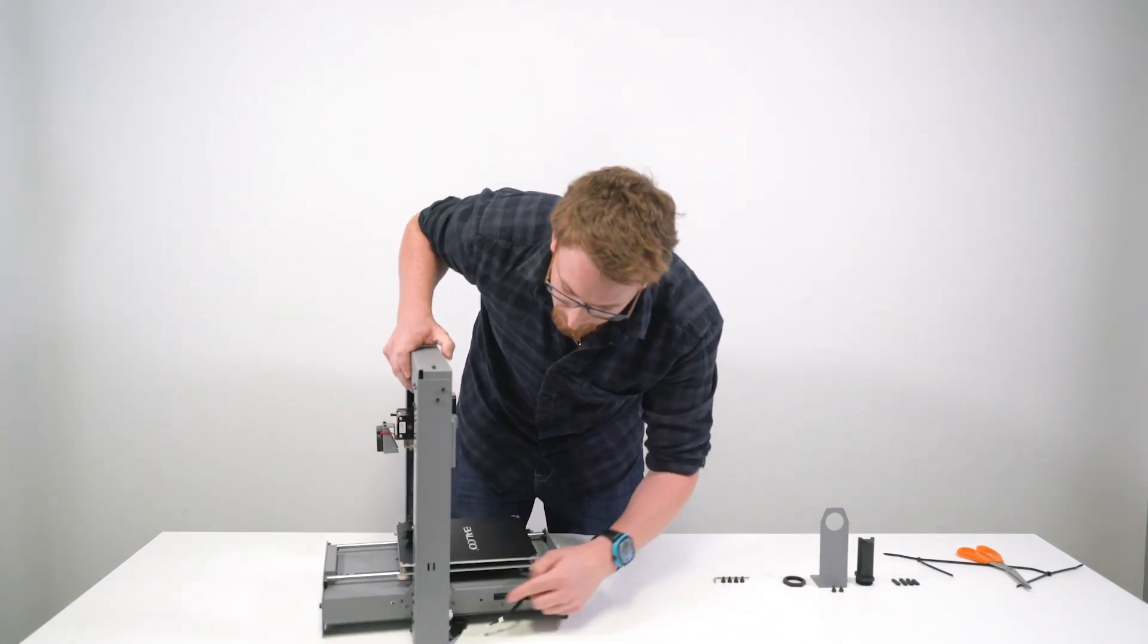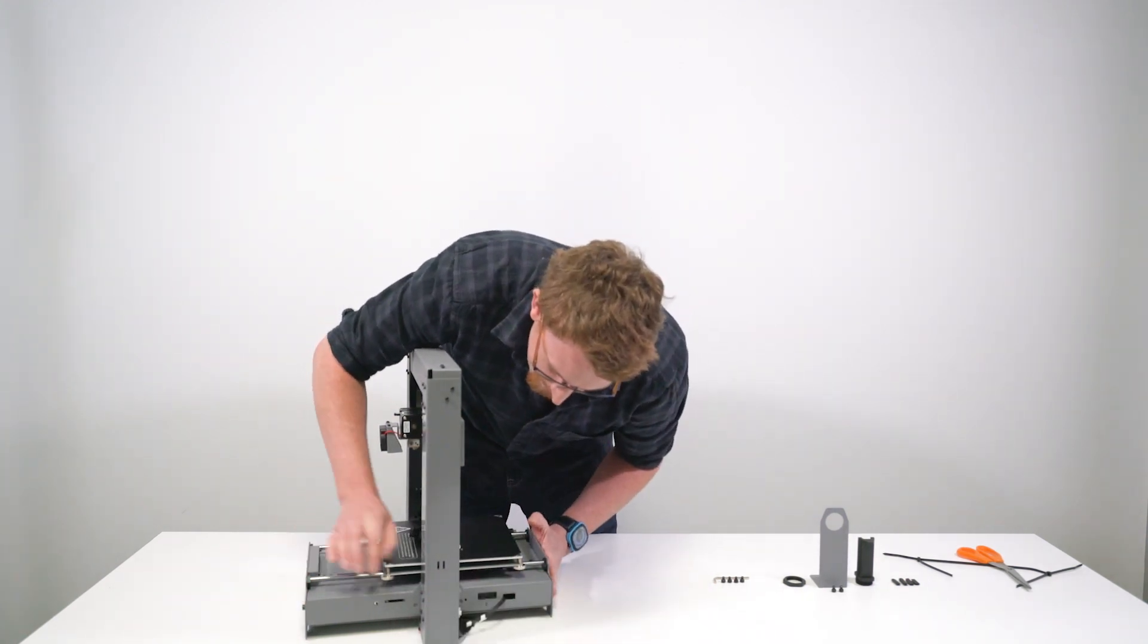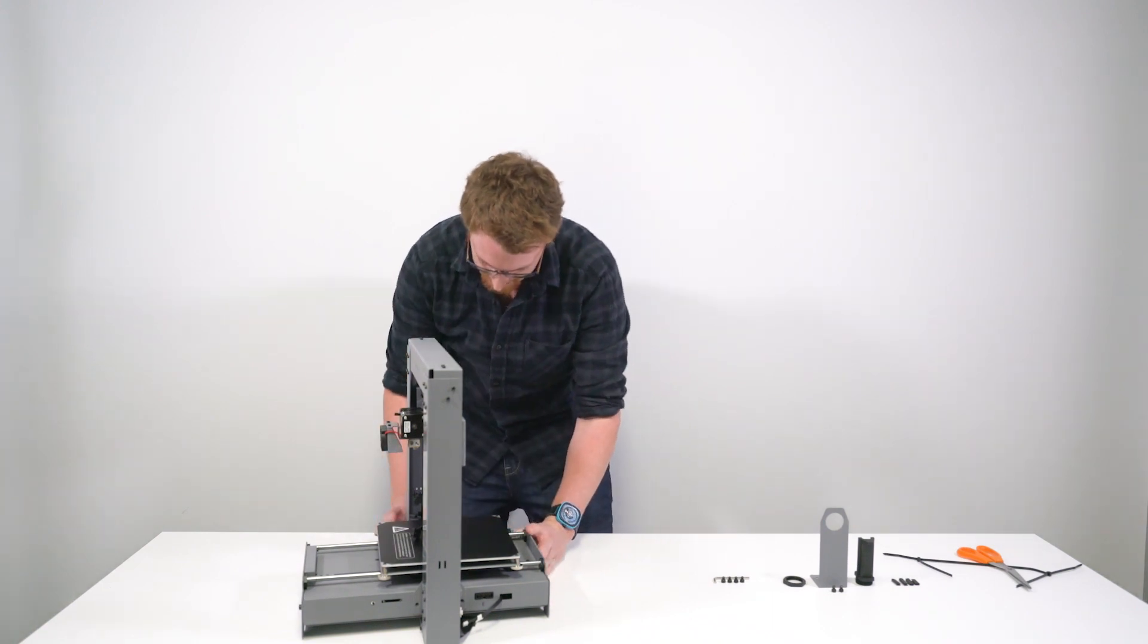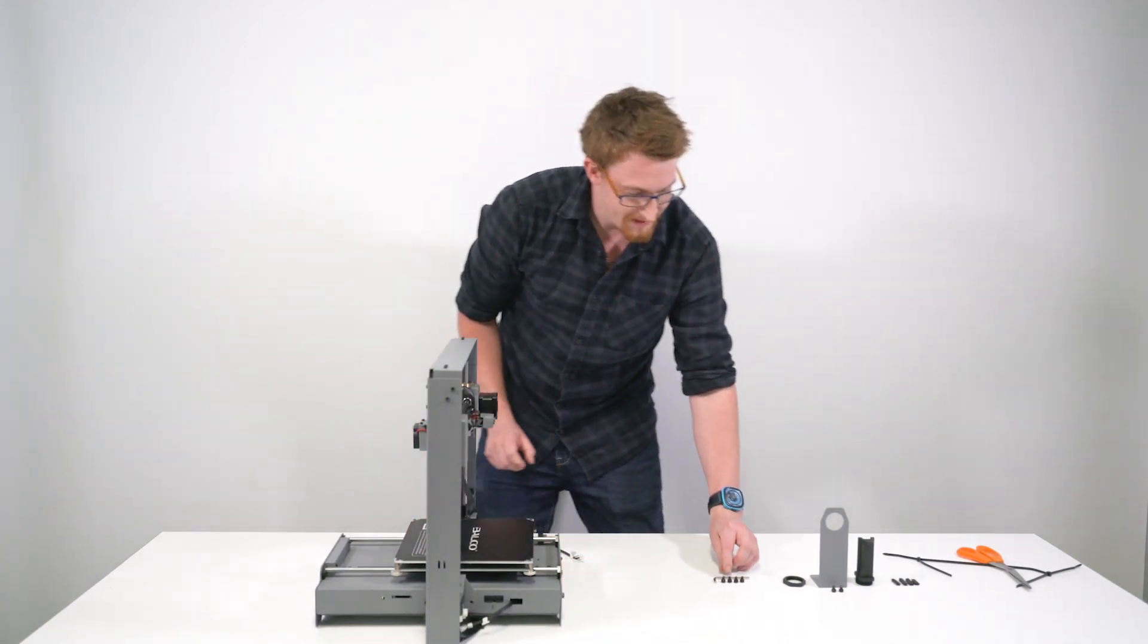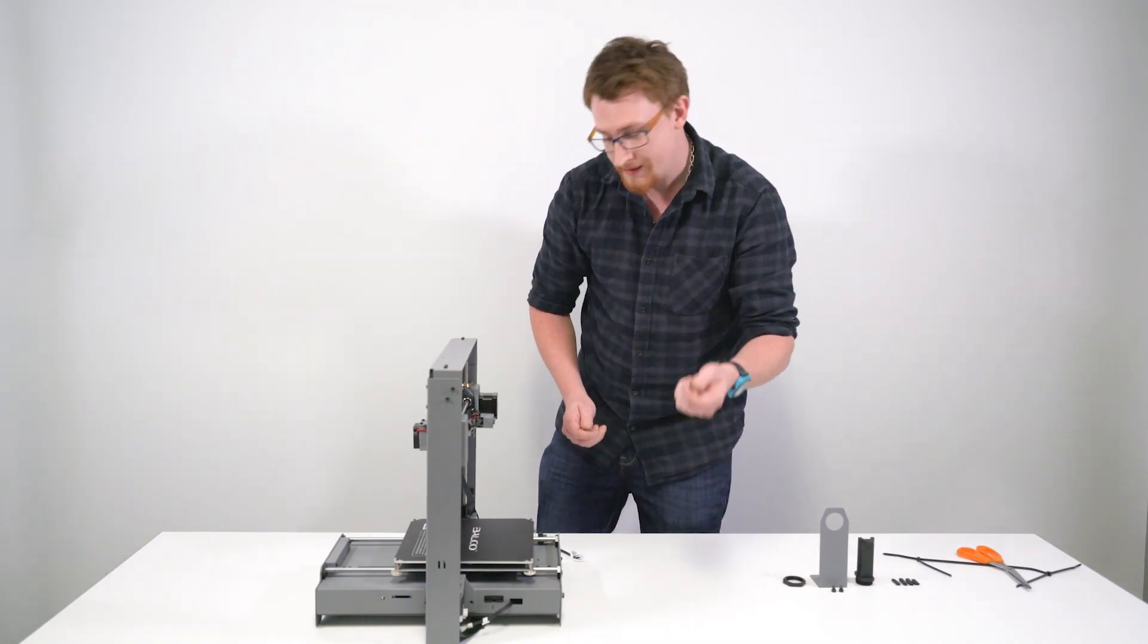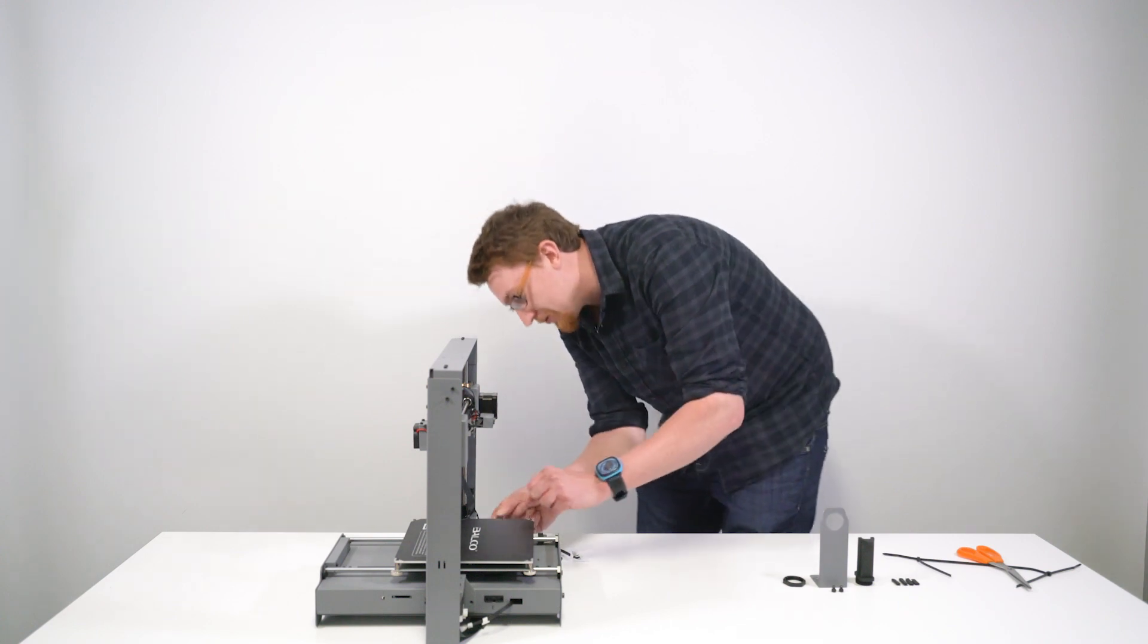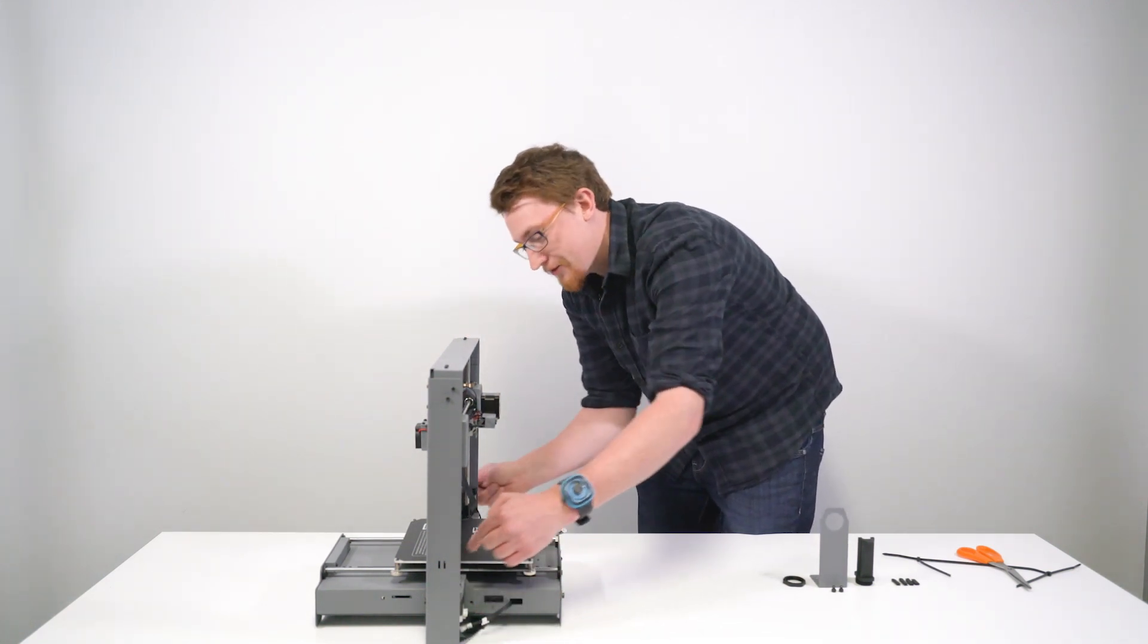What you'll notice too is some bolt holes here. We're going to make sure that we match those up perfectly. There we go. Now getting your hex wrench and the four largest bolts here, we're going to place those into the holes. It's going to be two at the back and two at the front.